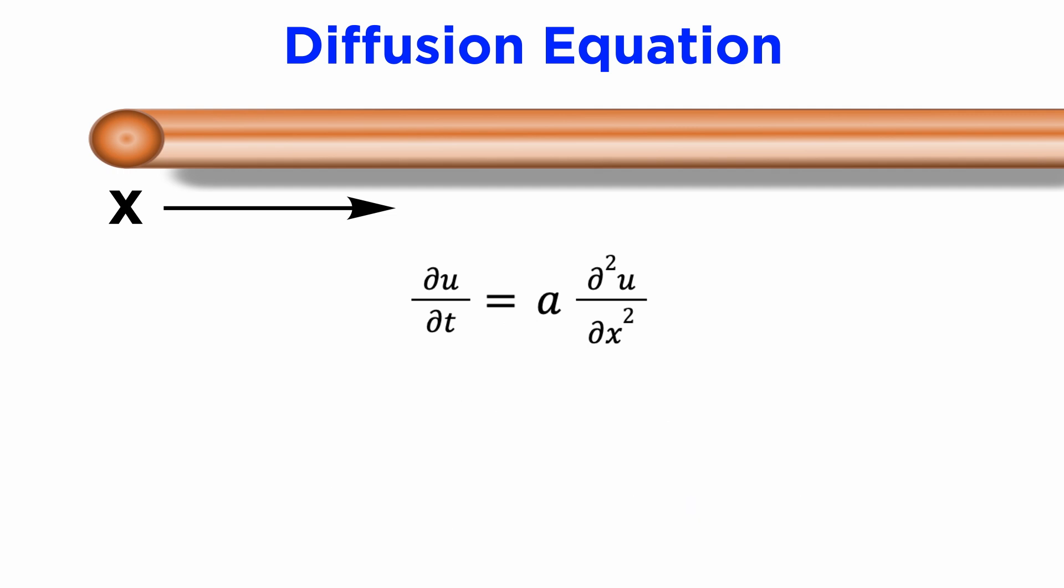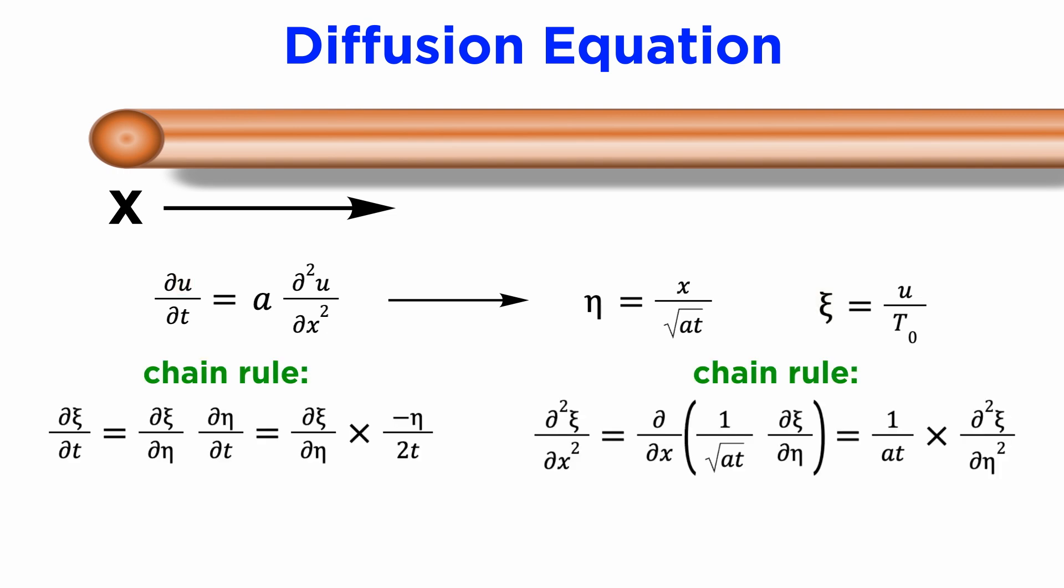Let's see how this can help us bypass the problem we encountered earlier. We will make substitutions to replace our length variable x with our normalized length variable x divided by square root of A t, which we will now call eta, and replace our temperature variable u with our normalized temperature variable u divided by T_0, which we will now call xi. We need to use the chain rule to use these substitutions in our PDE, and we will end up with a second order ordinary differential equation, where both the variables are dimensionless.